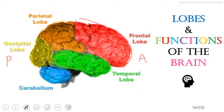Now these four lobes are the main lobes of the brain, and they have a partner side on the opposite side of the brain because we have a left and right side of the brain.